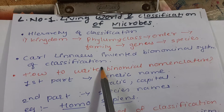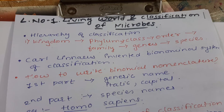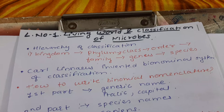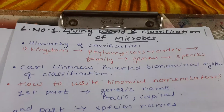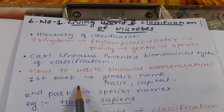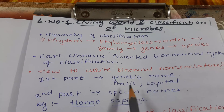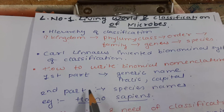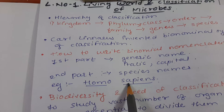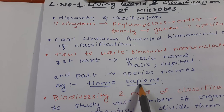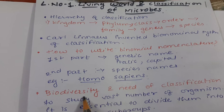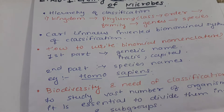The binomial system of classification is used to give a scientific name to a living organism. In binomial nomenclature, the first part is the generic name, written in italics with a capital letter. The second part is the species name. For example, Homo sapiens — Homo is the generic name and sapiens is the species name, meaning the developing or wise human.